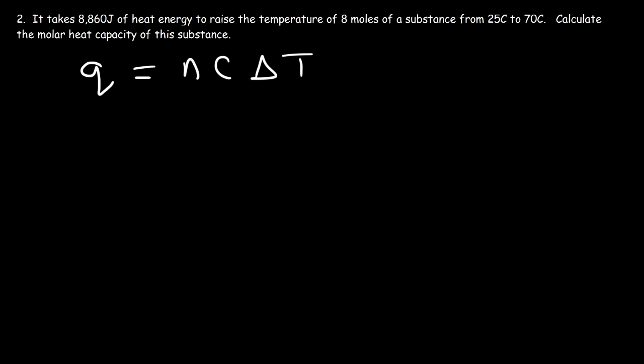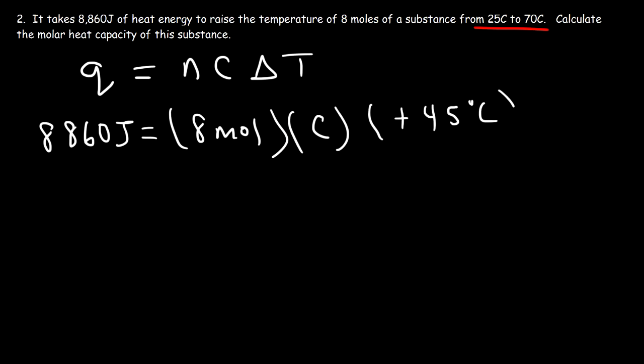This time we already have the value of Q, it's 8,860 joules. Now we have n as well, that's 8 moles, and the molar heat capacity is what we're solving for. Now the change in temperature, that's going to be 70 minus 25, so that's an increase of 45 degrees Celsius. Now first, let's multiply 8 by 45. 8 times 45 is 360.